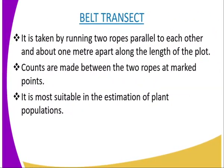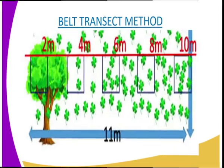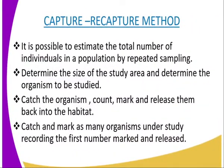Having done that, we are going to have our third method of population estimation, which is known as the capture-recapture method. In this method, it is possible to estimate the total number of individuals in a population by repeated sampling. After selecting the study area, determine its size and choose the organisms to be studied. Select an appropriate technique for the organisms' capture. Catch the organisms, count, mark and release them back into the habitat. Catch and mark as many organisms under study, recording the first number marked and released.